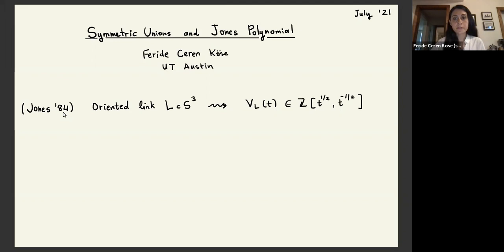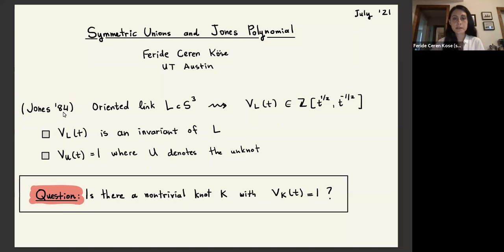In 1984, Jones defined a very powerful invariant called the Jones polynomial for oriented links in S³, and we know that this polynomial is just one for the unknot. However, we still don't know if there exist other knots besides the unknot that has the Jones polynomial as one, like a trivial Jones polynomial.